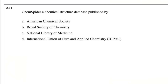Question number 61: ChemSpider — a chemical structure database — is published by which organization? Options: American Chemical Society, Royal Society of Chemistry, National Library of Medicine, International Union of Pure and Applied Chemistry. The answer is Royal Society of Chemistry.